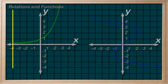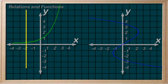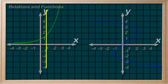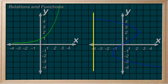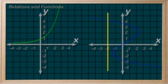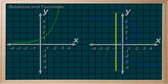Doing our vertical line test from left to right on the first relation, we see it's clearly a function — it never intersects more than once at any x-position. Doing the vertical line test on the second graph, we do see that we intersect the relation more than once. Here's one example: it intersects three times. This demonstrates that there are multiple y-values for that given x-value — x equals negative 1 in this case. Thus, this relation is clearly not a function. It fails the vertical line test.